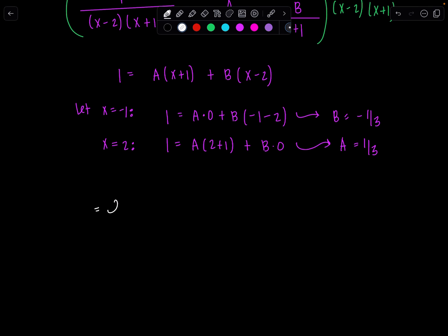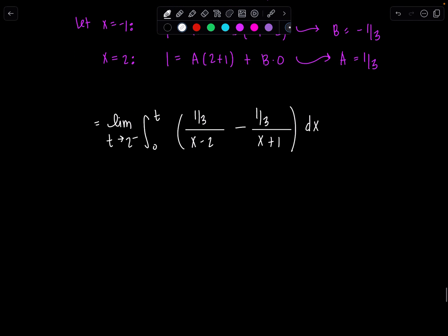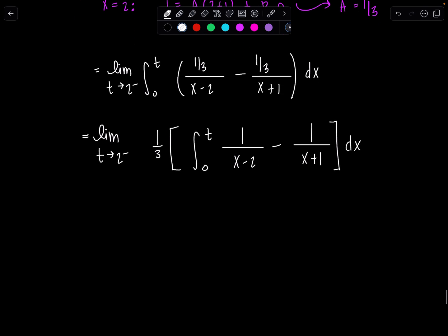I'm going to rewrite now my integral with the constants and the decomposition that I have. You guys, you have to write lim every step of the way, okay? T goes to 2 from the left, 0 to T. And then A is one third over x minus 2. And then B was negative one third. So I'll write minus one third over x plus 1 dx. Alright, why don't we take those one thirds out? They don't need to be in there. I'm not particularly fond of them. So one third, and then we have here integral 0 to T, 1 over x minus 2 minus 1 over x plus 1 dx. Okay, great.